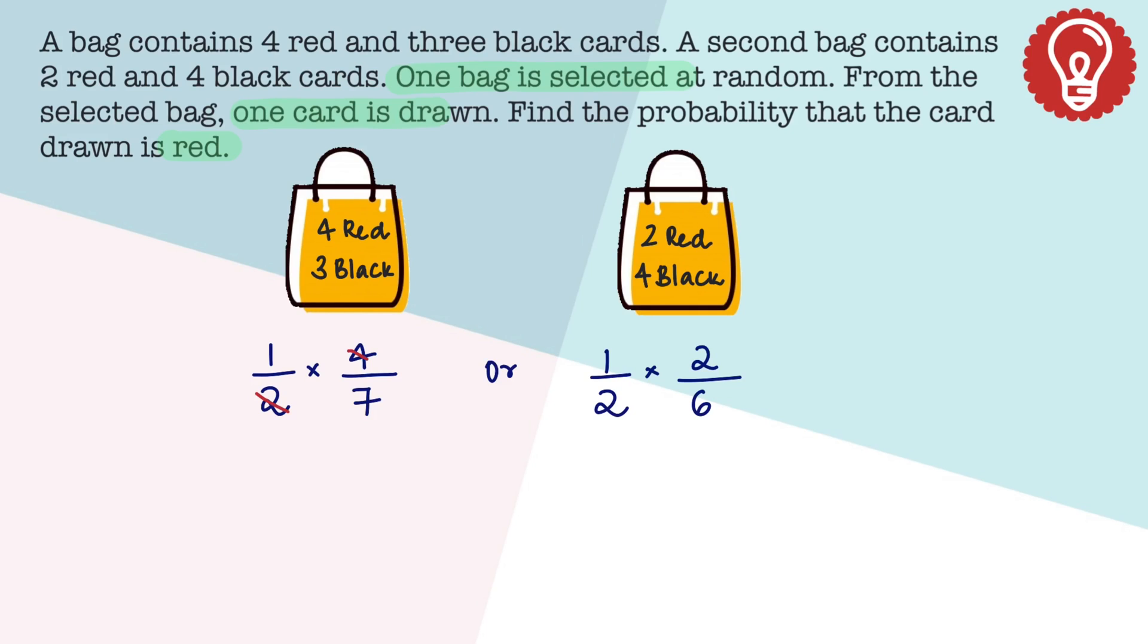Strike off the 2 here and this as well. And if I have to simplify this, this is 2 by 7, or means a plus, and this is 1 by 6. LCM is 42. So that is 12 and 7 which is 19 by 42.